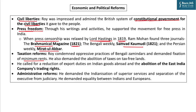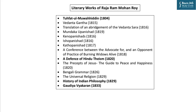Raja Ramohan Roy also demanded fixation of minimum rents, reduction of export duties, and was very vocal for abolition of the East India Company's trading rights. He also demanded indianization of superior services and separation of the executive from the judiciary — an idea now inscribed in the DPSP. You must take a cursory look at the list of literary works of Raja Ramohan Roy.